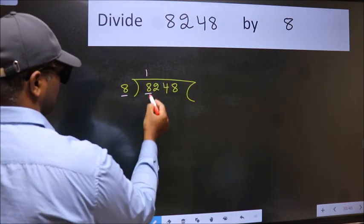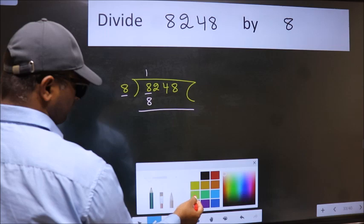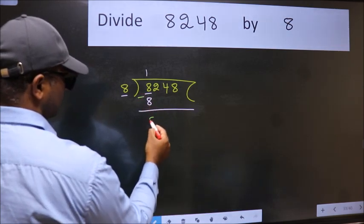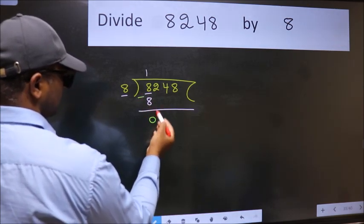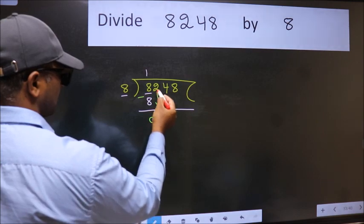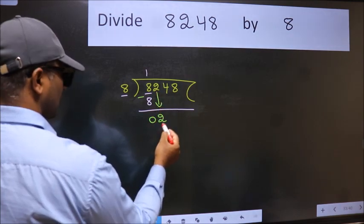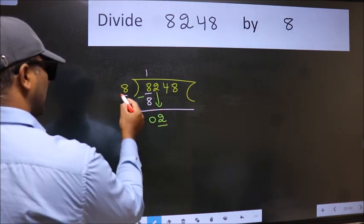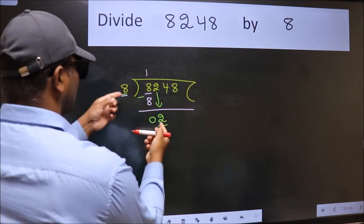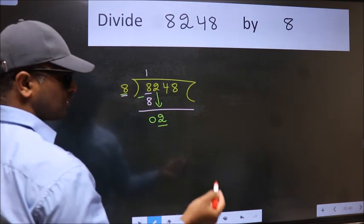8 times 1 is 8. Now we should subtract. We get zero. After this, bring down the beside number. So 2 down. Now here we have 2 and here 8. 2 is smaller than 8, so we should bring down the second number.